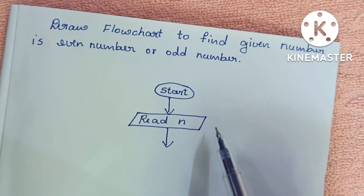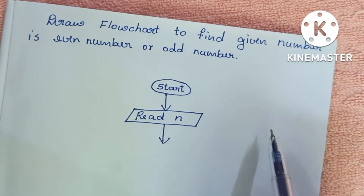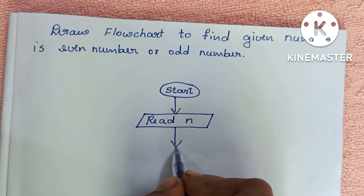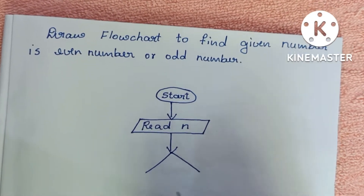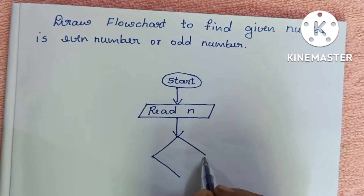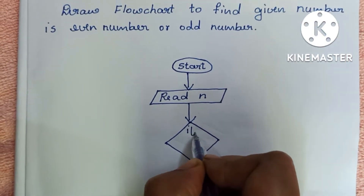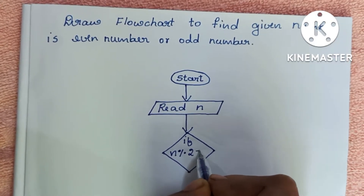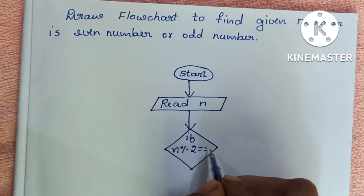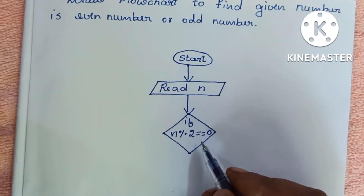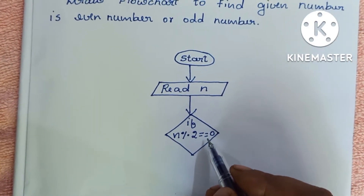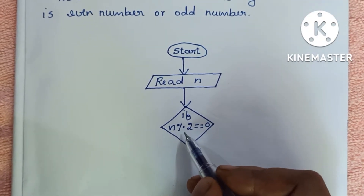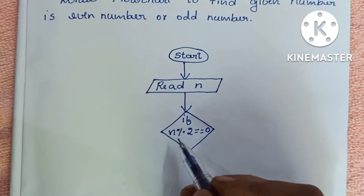To determine whether N is even or odd, we calculate N modulo 2. If it generates 0, it is an even number; otherwise it is an odd number. Comparison is always done within a diamond shape. Draw a diamond and write: if N modulo 2 is equal to 0.